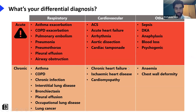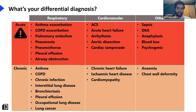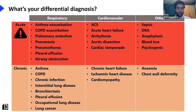Less urgent considerations are chronic causes: stable asthma, stable COPD, chronic infection like tuberculosis, interstitial lung disease, bronchiectasis, long-standing pleural effusions, occupational lung disease, and lung cancer — all still very important but not going to kill the patient imminently. Chronic cardiovascular causes include chronic heart failure, ischemic heart disease, and cardiomyopathy. Finally, anemia and chest wall deformity such as kyphoscoliosis. When someone comes in, think: is this acute or chronic? Is it respiratory, cardiovascular, or other? That helps you identify the most likely differential.